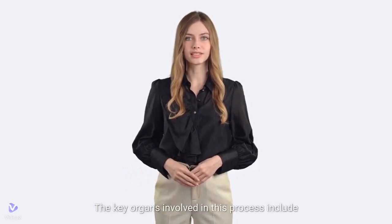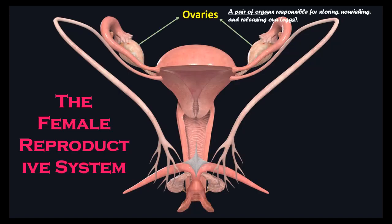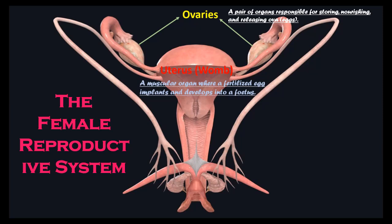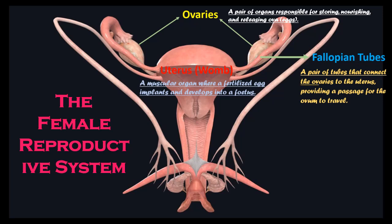The key organs involved in this process include: ovaries, a pair of organs responsible for storing, nourishing, and releasing ova, meaning eggs; the uterus or womb, a muscular organ where a fertilized egg implants and develops into a fetus; and fallopian tubes, a pair of tubes that connect the ovaries to the uterus, providing a passage for the ovum to travel.